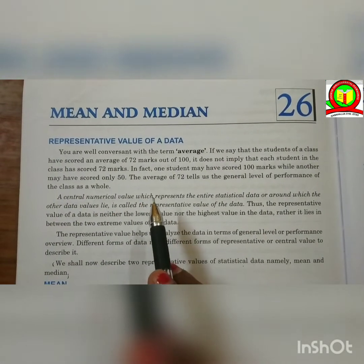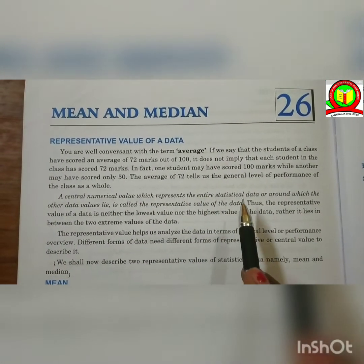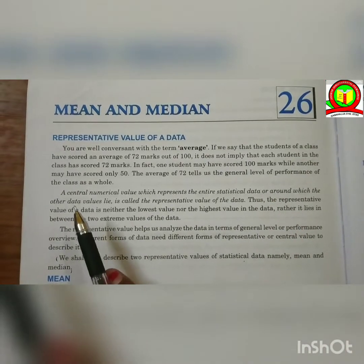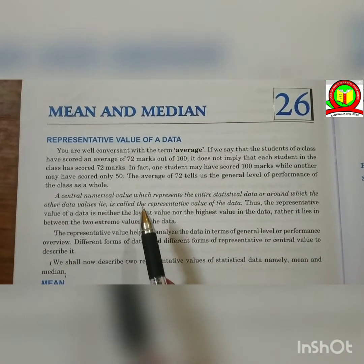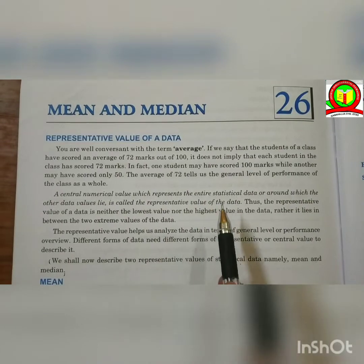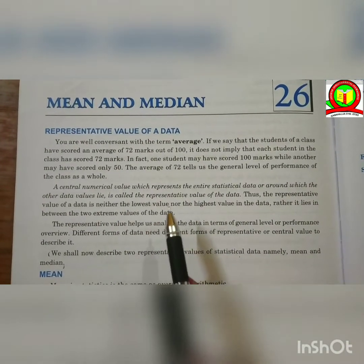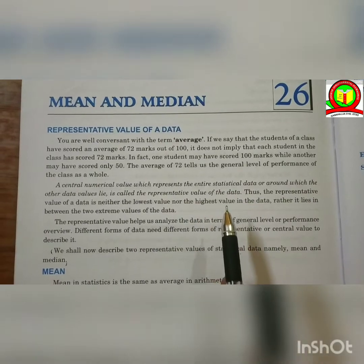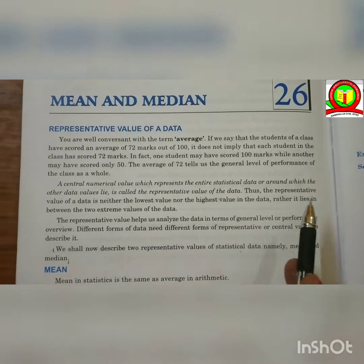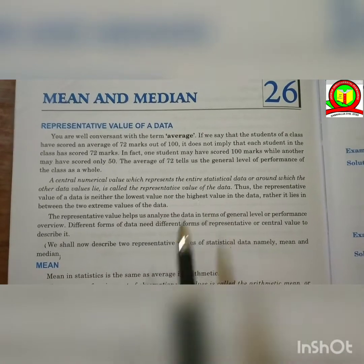A central numerical value which represents the entire statistical data or around which the other data values lie is called the representative value of the data. Thus, the representative value of a data is neither the lowest value nor the highest value in the data. Rather, it lies in between the two extreme values of the data.